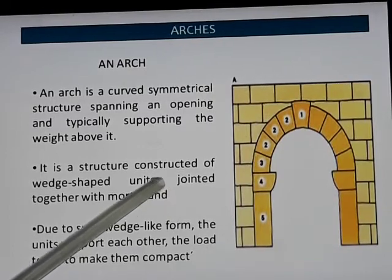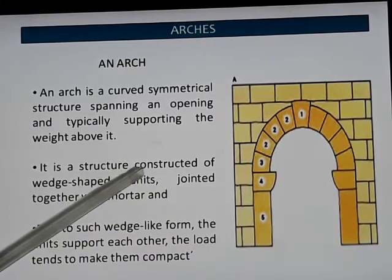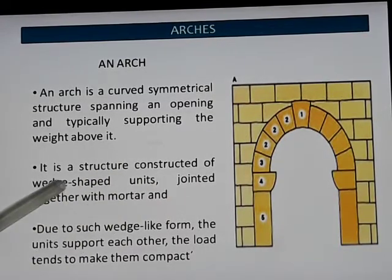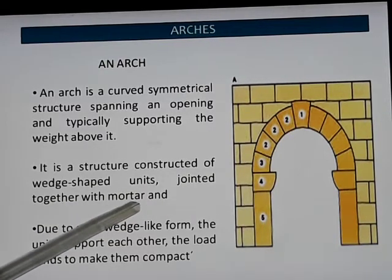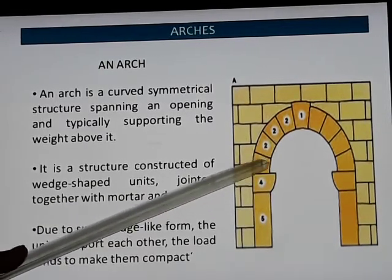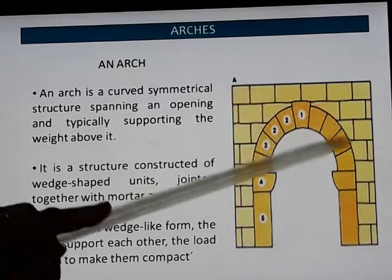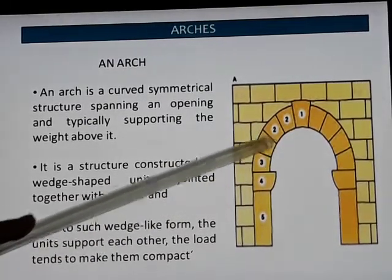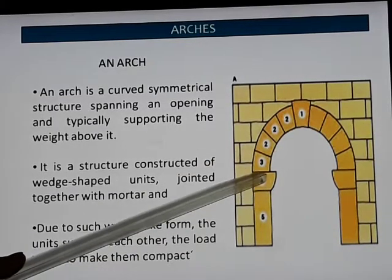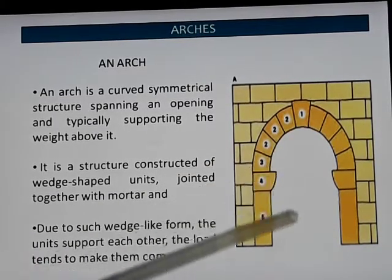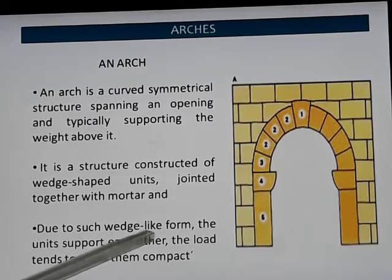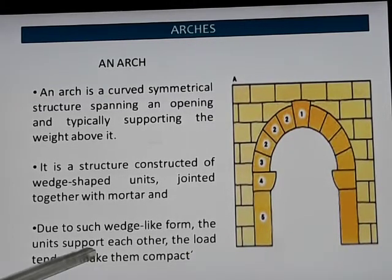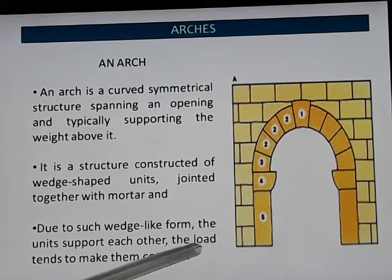Secondly, it is a structure constructed of wedge-shaped units jointed together with mortar. As you can see, these wedge-shaped units are brought together or joined together with the help of mortar. Thirdly, due to such wedge-like forms, the units support each other and the load tends to make them more compact.